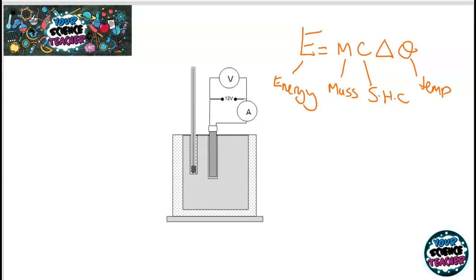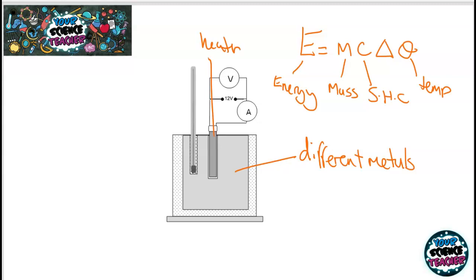In this practical, you calculate the specific heat capacity of different metal blocks. You should find that different metals require different amounts of energy to heat up by the same amount, and therefore have different specific heat capacities. To work out the energy supplied to the heater, remember that to make it more accurate you could use a digital thermometer.